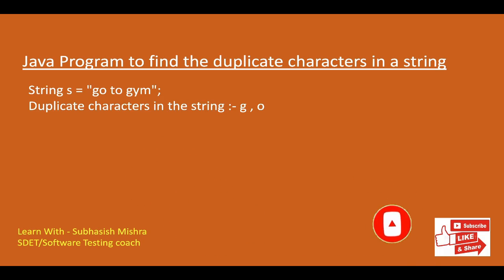Here you can see one example. I have taken one string: 'go to gym'. The duplicate characters here are G and O. G is present twice and O is also present twice. So duplicate characters are G and O. Let's do it through a program and find the duplicate characters in a string.